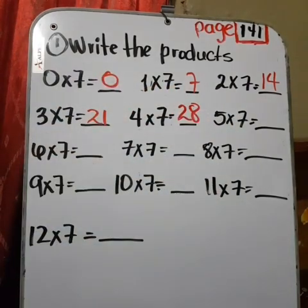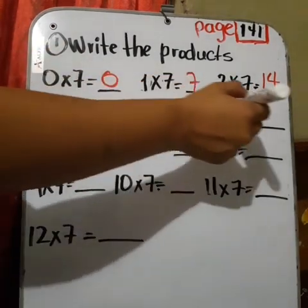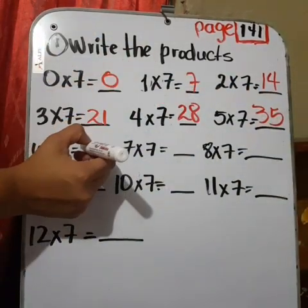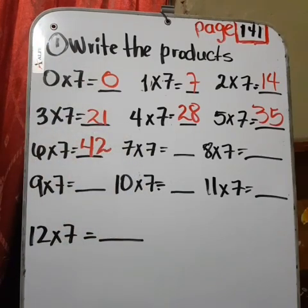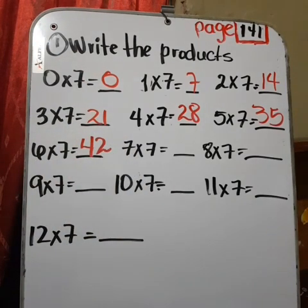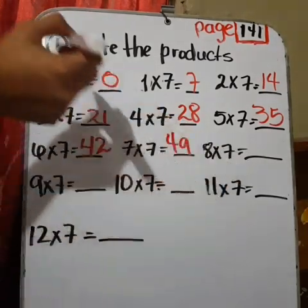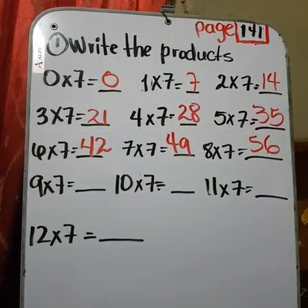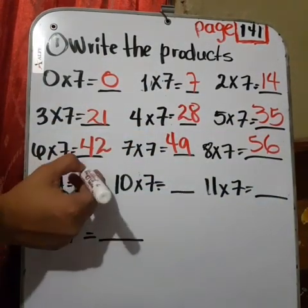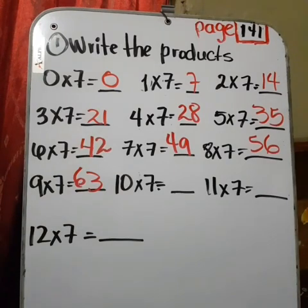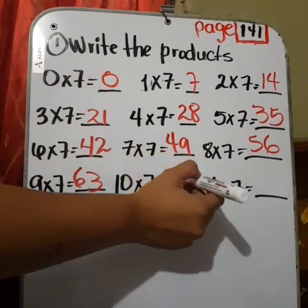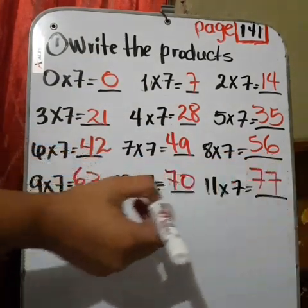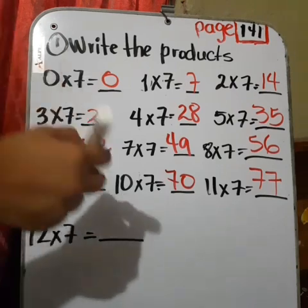Five times seven, thirty-five. Six times seven, forty-two. Seven times seven, forty-nine. Eight times seven, fifty-six. Nine times seven, sixty-three. Ten times seven, seventy. Eleven times seven, seventy-seven. Twelve times seven, eighty-four.